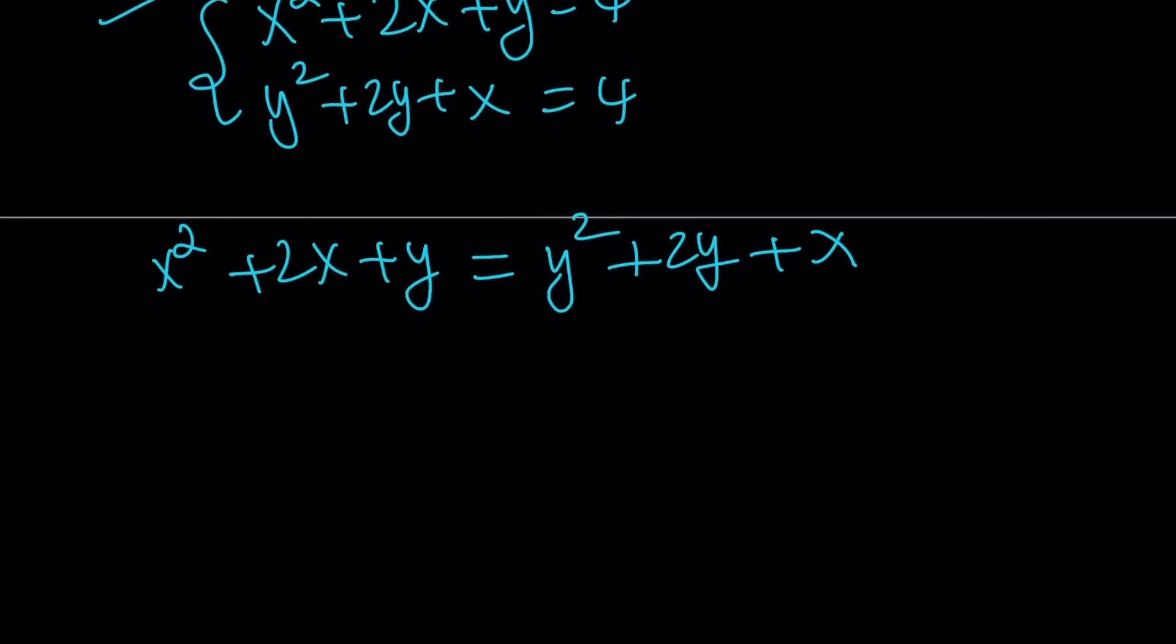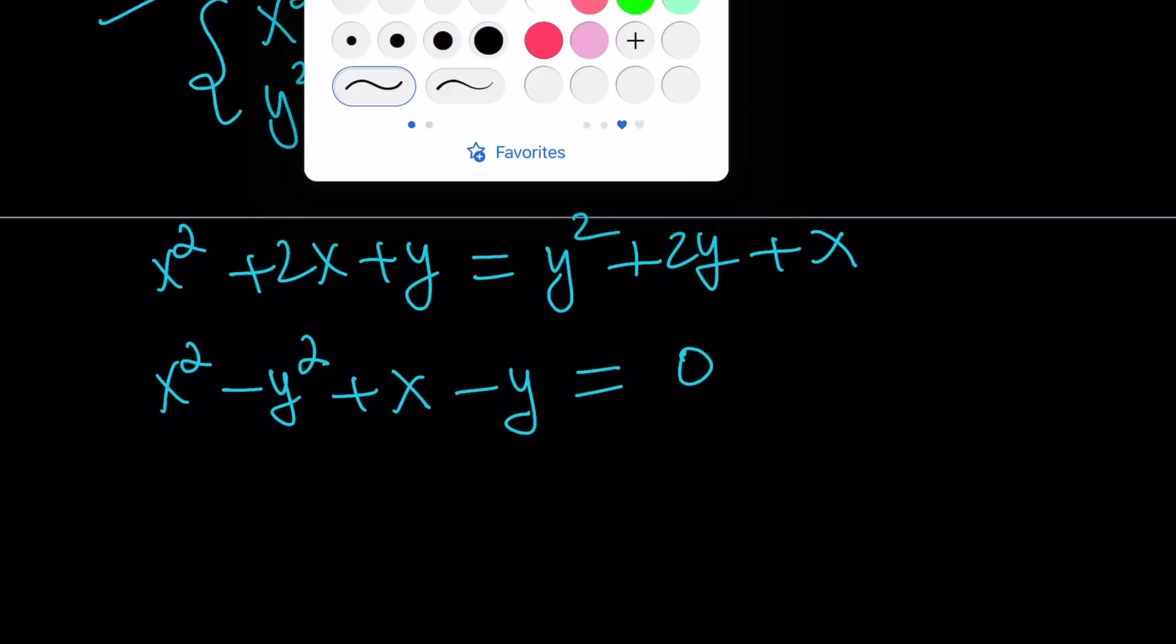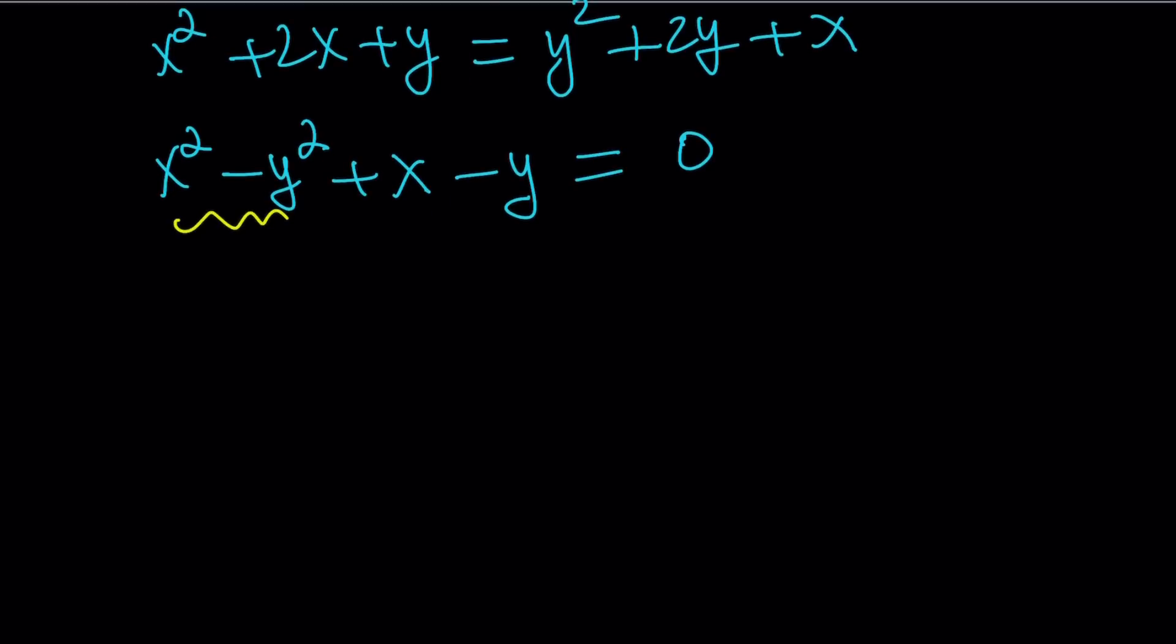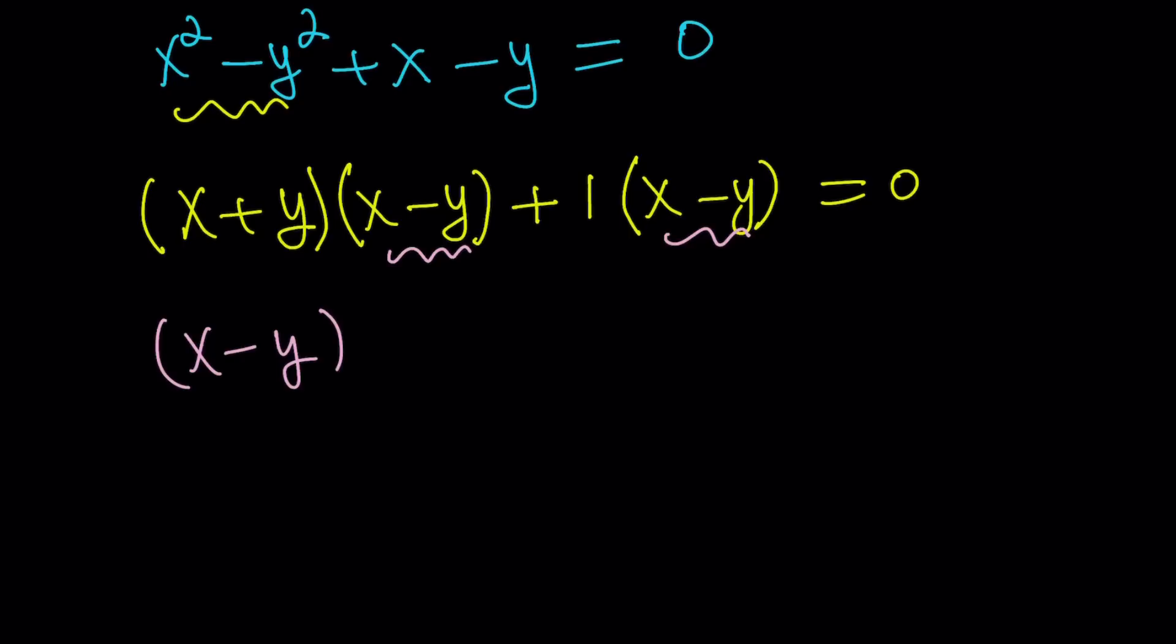From here, nothing cancels out, but I can put everything on the same side, putting the x squared and y squared together. x squared minus y squared, 2x minus x is going to give me positive x, and y minus 2y is going to give me negative y, and the whole thing is equal to 0. Beautiful. Now, this is factorable by grouping, because x squared minus y squared is a difference of two squares. So x squared minus y squared can be factored as x plus y multiplied by x minus y. And x minus y has no common factors, but we can always take out one. Notice that x minus y is a common factor. Therefore, we can take it out. x minus y multiplied by x plus y plus 1, and the whole thing is equal to 0.